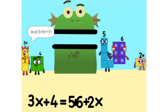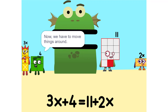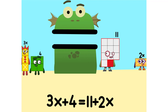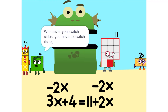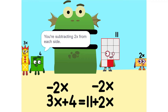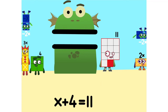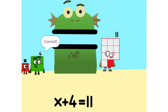And 5 plus 6 is 11. Now we have to move things around. We have to move this 2X to this side. So 5X. Whenever you switch sides, you have to switch its sign. So if it's positive, it becomes negative and vice versa. Why? Think of it this way — you're subtracting 2X from each side. So it'd just be 1X, or X. Correct.